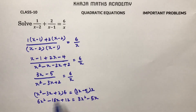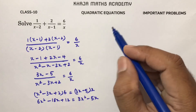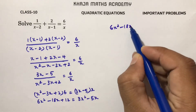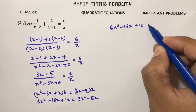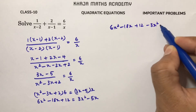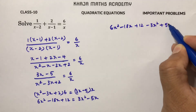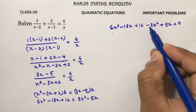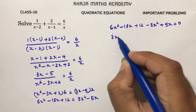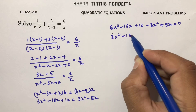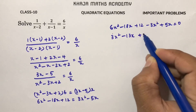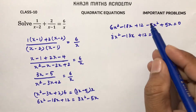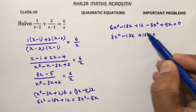Transpose all terms to one side: 6x squared minus 18x plus 12 minus 3x squared plus 5x equals 0. Combining like terms: 6x squared minus 3x squared is 3x squared, and minus 18x plus 5x is minus 13x plus 12 equals 0.